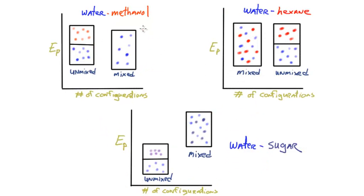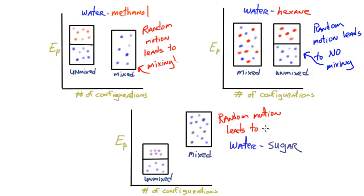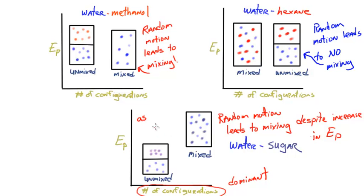Let's review the three examples. With water and methanol, both the energetic and configurational aspects favored mixing — random motion leads to mixing, and there's also a slight potential energy drop that favors mixing. With water and hexane, random motion actually leads to no mixing, because the unmixed state is of higher configurations. With water and sugar, energetic stability favors the unmixed state but configurational stability favors the mixed state, giving a temperature dependence. At normal temperatures, sugar dissolves quite well in water, so configurational stability is dominant. Increasing temperature provides enough energy to dissolve even more sugar, while decreasing temperature makes sugar less soluble.